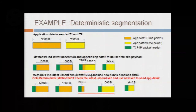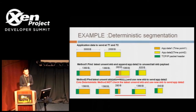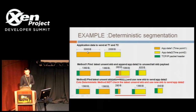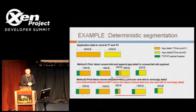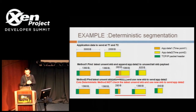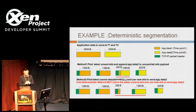Another example is deterministic segmentation. Application data going down the network stack is assembled into SKB buffers, and the buffer size is determined by the MTU size. For example, if an application sends data of 3,000 bytes, it will be divided into three SKB buffers. Later, when the application sends another data chunk, it may be appended to the last SKB buffer depending on whether that buffer has been sent out, triggering another possibility of packet divergence. Our solution is simple: just prevent the subsequent package from being appended to the last SKB buffer.